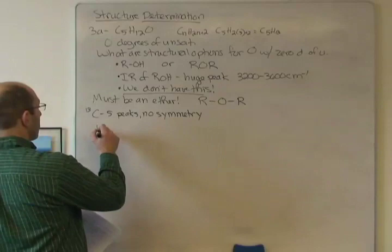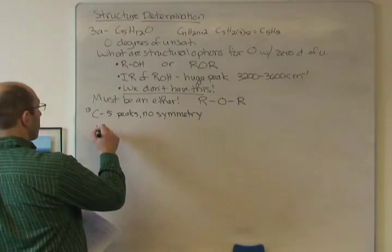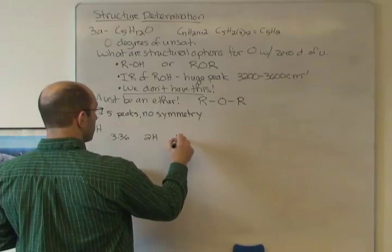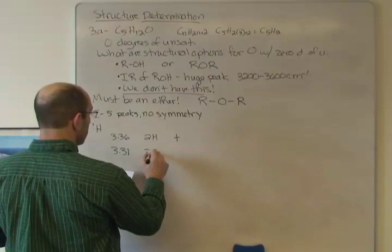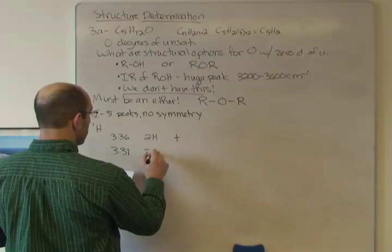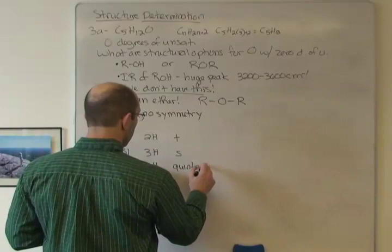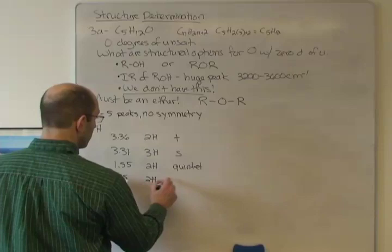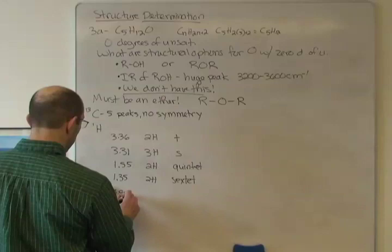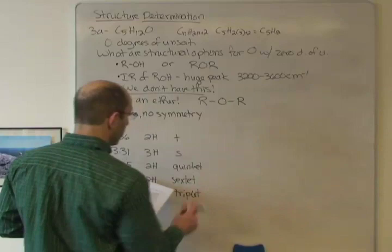If we look at the proton NMR, this is what we have. We have 3.36, 2H triplet, 3.31, 3H singlet, 1.55, 2H quintet, 1.35, 2H sextet, and 0.95, 3H triplet. Okay, that's the given information.